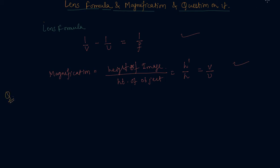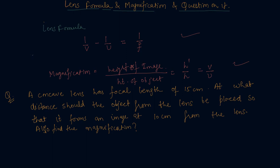Let me write the question. Here is the question which states that a concave lens has focal length of 15 centimeter. At what distance the object from the lens be placed so that it forms an image at 10 centimeter from the lens. This is the case which we have discussed in the image formation by a concave lens.